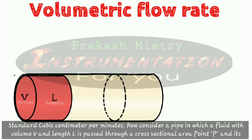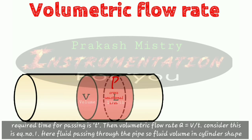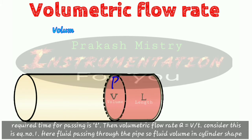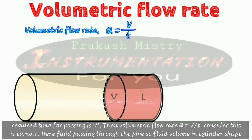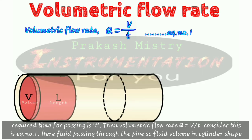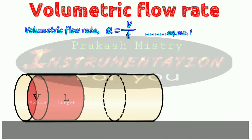Now consider a pipe in which a fluid with volume V and length L is passed through a cross section area at point P, and its required time for passing is T. Then the volumetric flow rate Q is equal to V divided by T — consider this as equation number one. Here the fluid passing through the pipe is in a cylindrical shape.